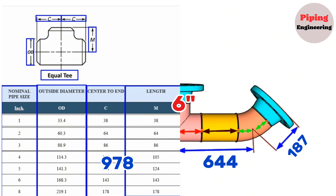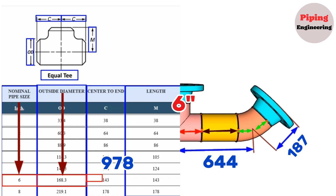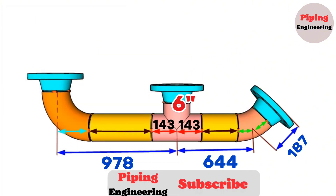In our example we will look at the row with nominal pipe size 6. The 6-inch equal T outside diameter is 168.3 millimeters. The 6-inch equal T center to N dimension is 143 millimeters. We will write this 143-millimeter measurement in our pipeline.